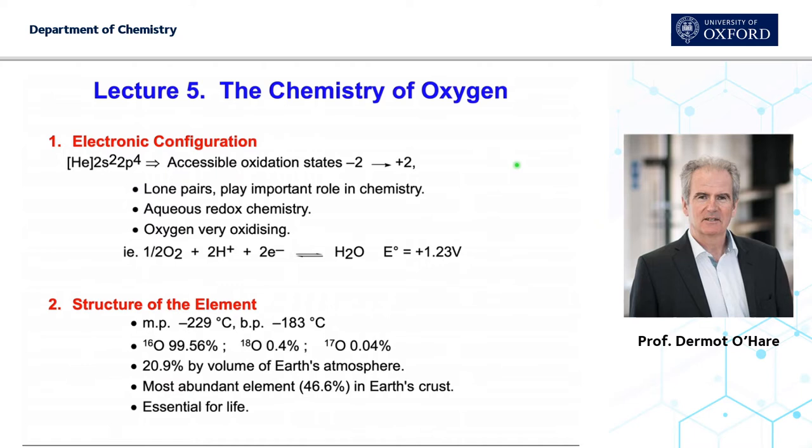For oxygen, we now have a 2s²2p⁴ atomic configuration. We're well past the midpoint of the first period, and as a result oxygen has a very high Z effective and electronegativity. The minus 2 oxidation state dominates, and in that oxidation state we have high directional lone pairs which will influence both the structure and reactivity of oxygen-containing compounds. It's an essential element, and as shown here it is highly oxidizing.